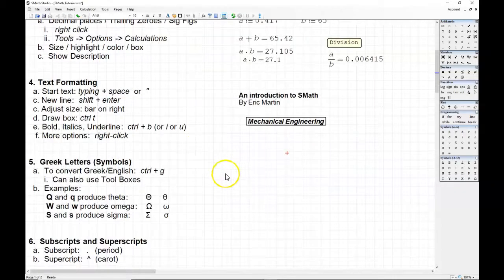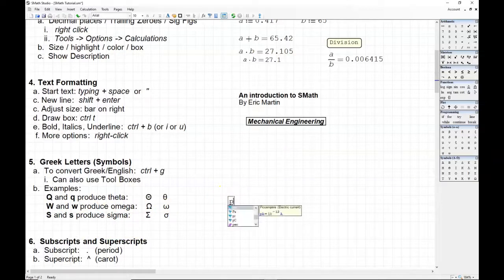We often use Greek letters in our engineering equations. So to create a Greek letter, all we need to do is type the letter and then type control G. I have some examples. Uppercase and lowercase Q produced uppercase and lowercase theta. W produces omega. S produces sigma. And we can even do pi. I'll type pi, control G. And that gives us our pi symbol. I can even make it equal or type equal. And it shows us that's 3.14, using the global settings of three significant figures that we had earlier.